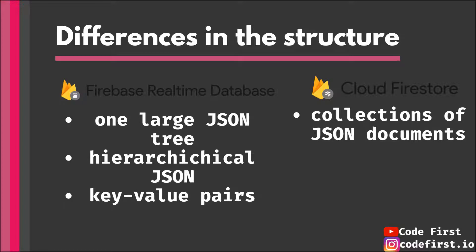Now let's look at the differences in structure. I also have a video detailing JSON and all its components, which I'll link below. The Realtime Database actually uses JSON and houses data as one large JSON tree: there is a root node, and then child nodes similar to JSON key-value pairs where values can be nested JSON objects or arrays. That's essentially how the Realtime Database stores data.